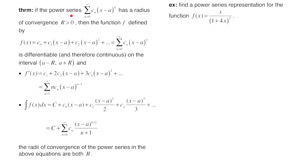This theorem says if the power series — we have a series c sub n of x minus a to the n — has a radius of convergence where r is positive, then the function f defined by f of x equals c0 plus c sub 1 times x minus a plus c sub 2 times x minus a squared plus dot dot dot, and then we have our general form, is differentiable and therefore continuous on the interval from a minus r all the way to a plus r.